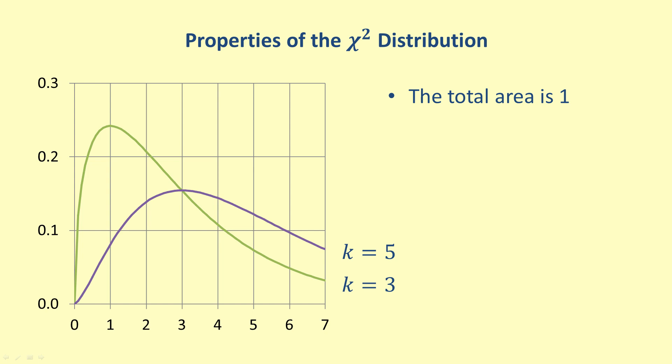Also, the curves are only defined for positive values. This follows from the fact that they can be described as the sum of squares of standard normal variables. A sum of squares is never negative.